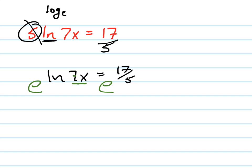You could do that a couple other ways. Another way you could do it is you could use the definition. Remember ln means log base e. So you can rewrite this using the equivalence into e to the 17 fifths equals 7x. Remember that property? They call that the equivalence or the definition of a log. So you could do it that way right there.